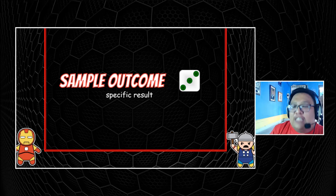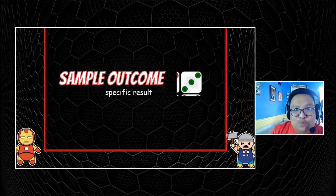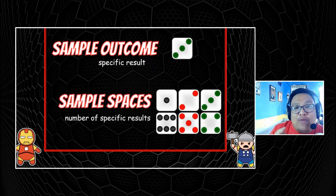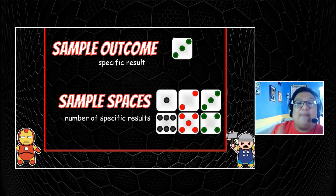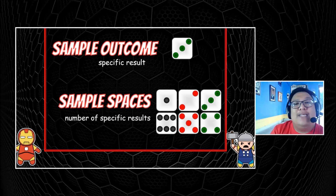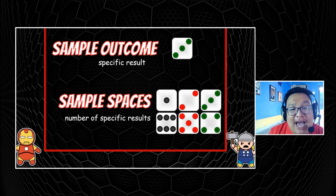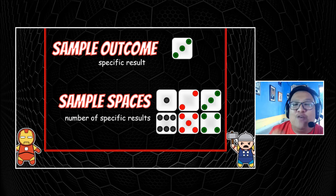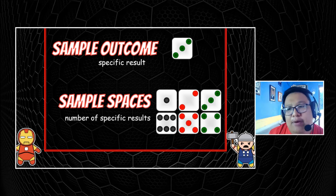Now, let's talk about this too. The sample outcome is the specific result; the sample space is the number of specific results — they are related. To get the sample space, you need to know what the outcomes are. And to get the outcome, you of course need to know your sample space. This is very important in probability.